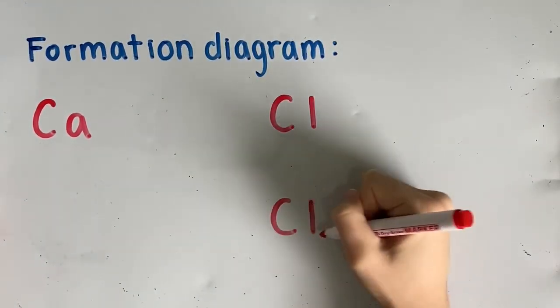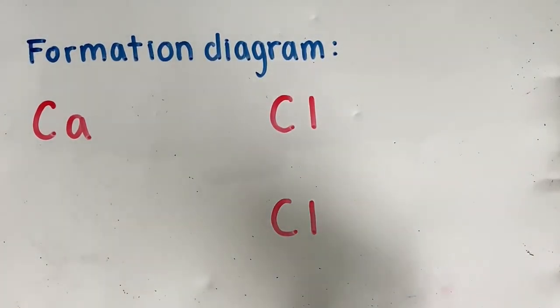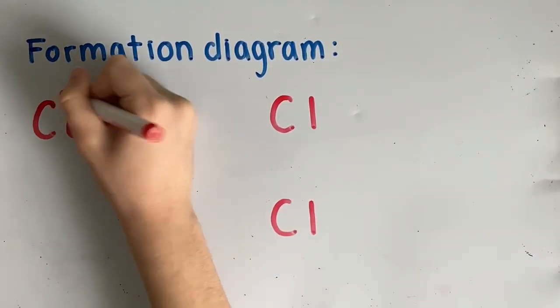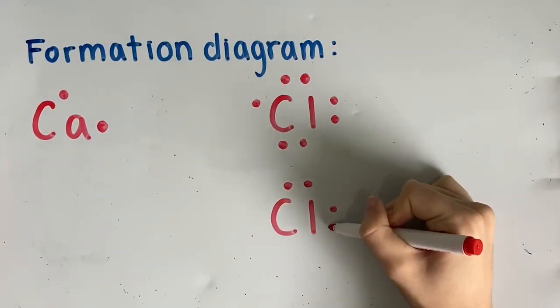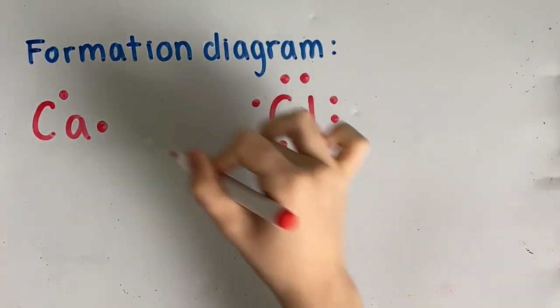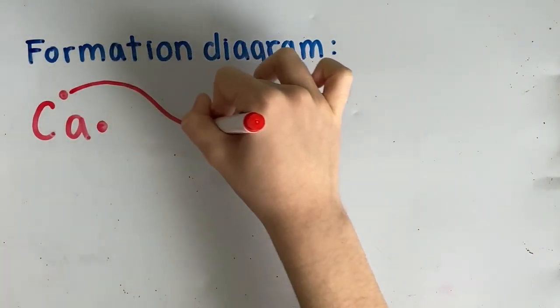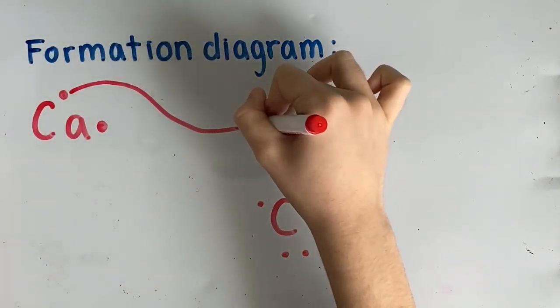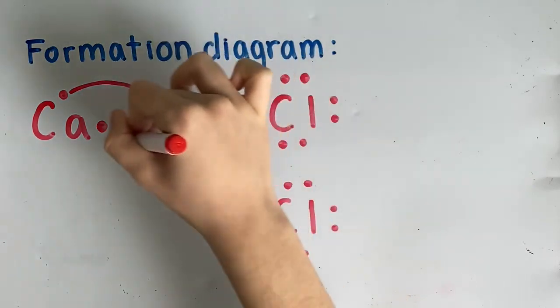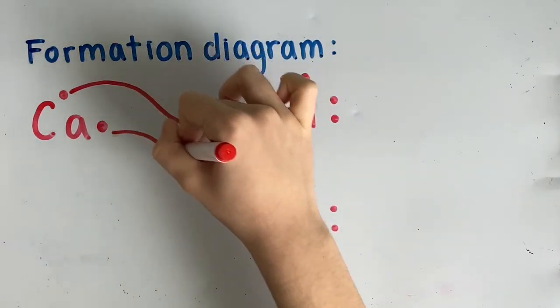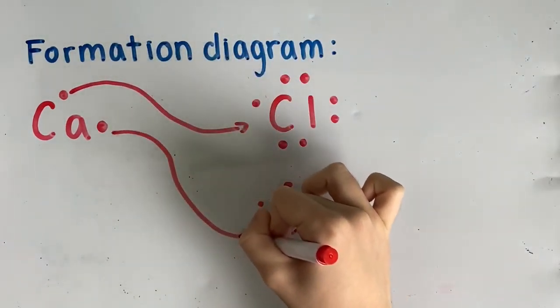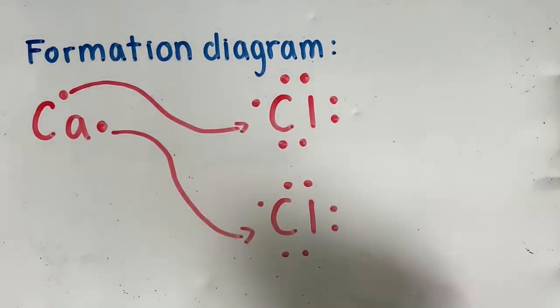After, you need to draw the corresponding valence electrons surrounding the atoms. Since the charge is two plus on calcium, there are two dots. Since the charge is one minus for chlorine, there would be seven electrons. Next, we use arrows to show the transfer of electrons. One calcium electron will be added to the valence shell of one chlorine atom in order to have a complete valence shell of eight electrons. The other electron from calcium will also go to the other chlorine atom, also completing its valence shell.